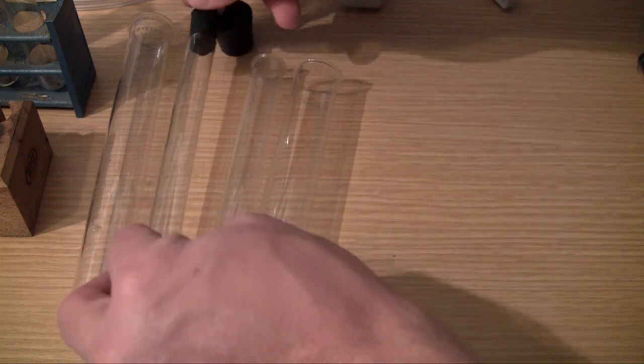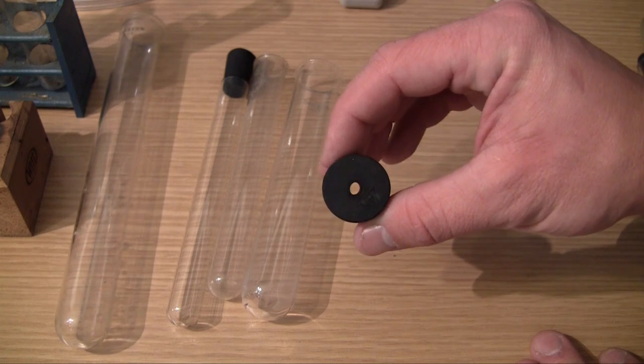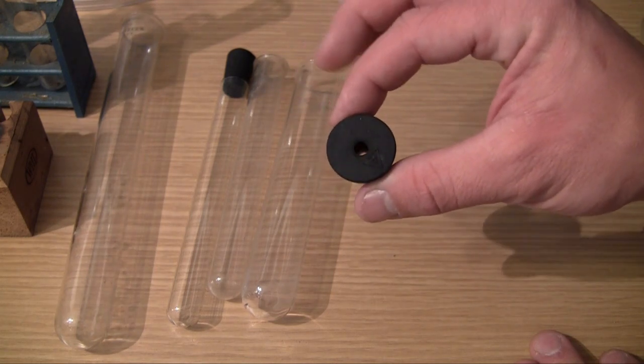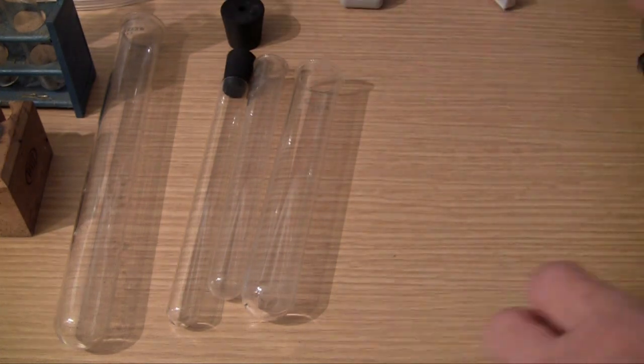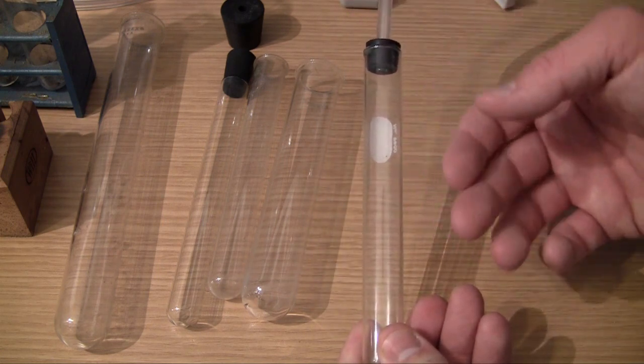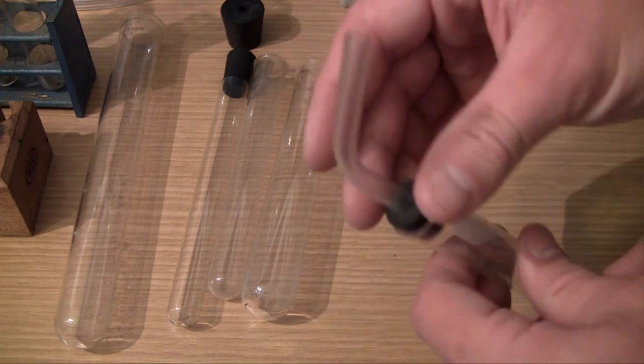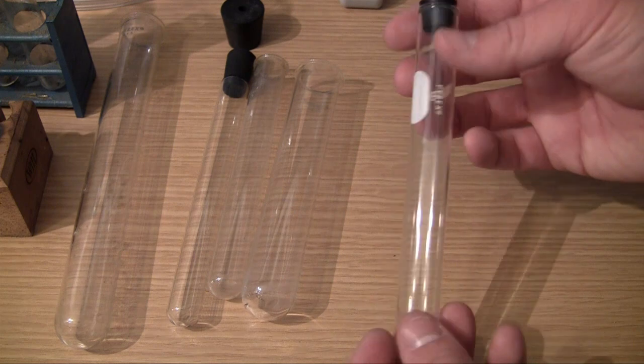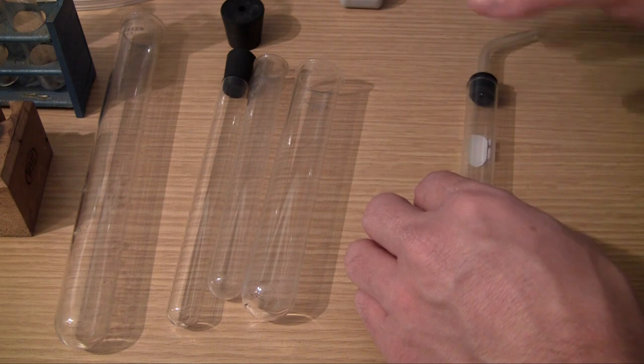And another thing that I would recommend getting is a rubber stopper with a hole in it, and actually you want to grab a couple of these. The reason that you would do this is not for storing samples, but sometimes we're going to be heating up chemicals and we're going to want to capture the gases or the fumes from the chemical reaction. So you actually use your rubber stopper with a hole and put a piece of glass or plastic tubing in there, and that is how you capture the gases from a chemical reaction.